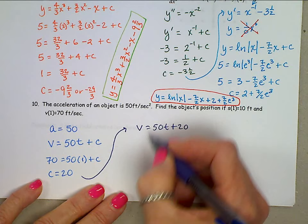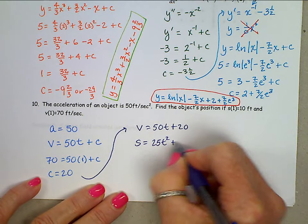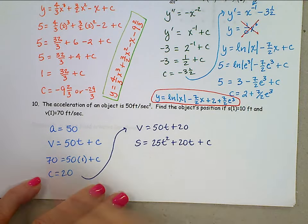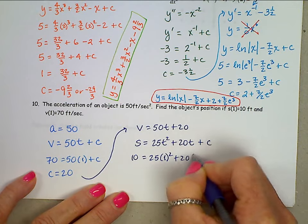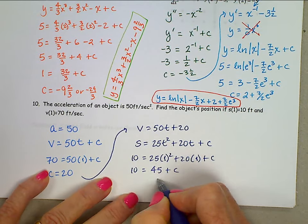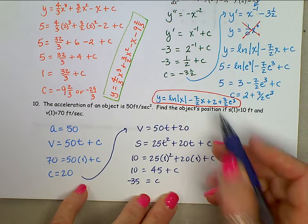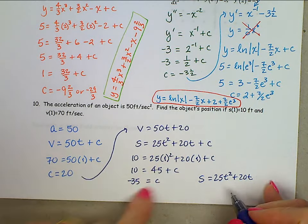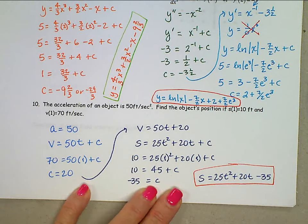So now we can get that velocity is 50t plus 20. Position is the antiderivative of velocity, so position is 25t squared plus a 20t plus a c. Plugging in that initial condition for position, s of 1 is 10, 10 is 25 times 1 squared, 20 times 1 plus a c. 25 and 20 is 45, c is negative 35, we are not done. Find the object's position, s is 25t squared plus 20t minus 35, and there we go. Thank you for joining me.